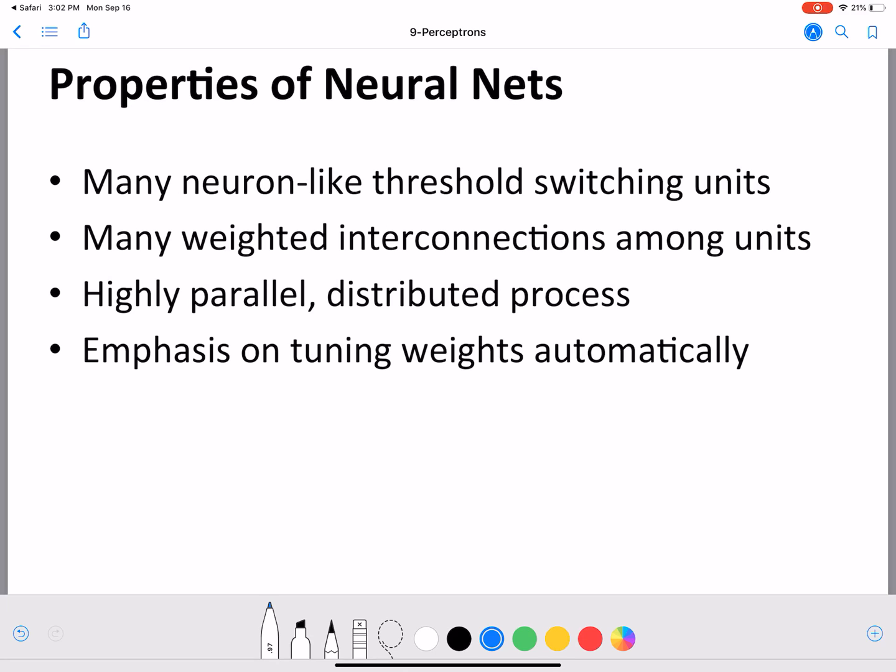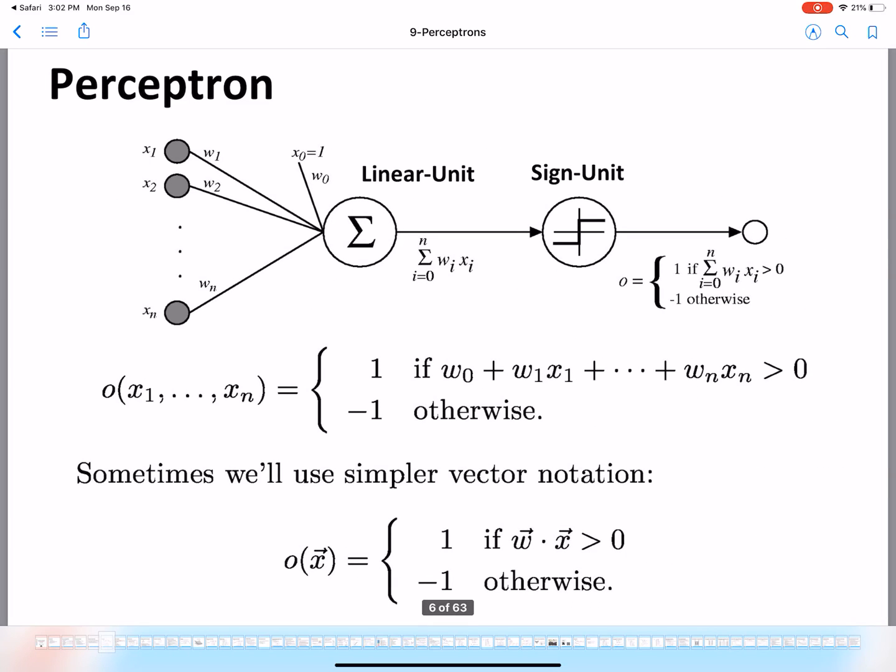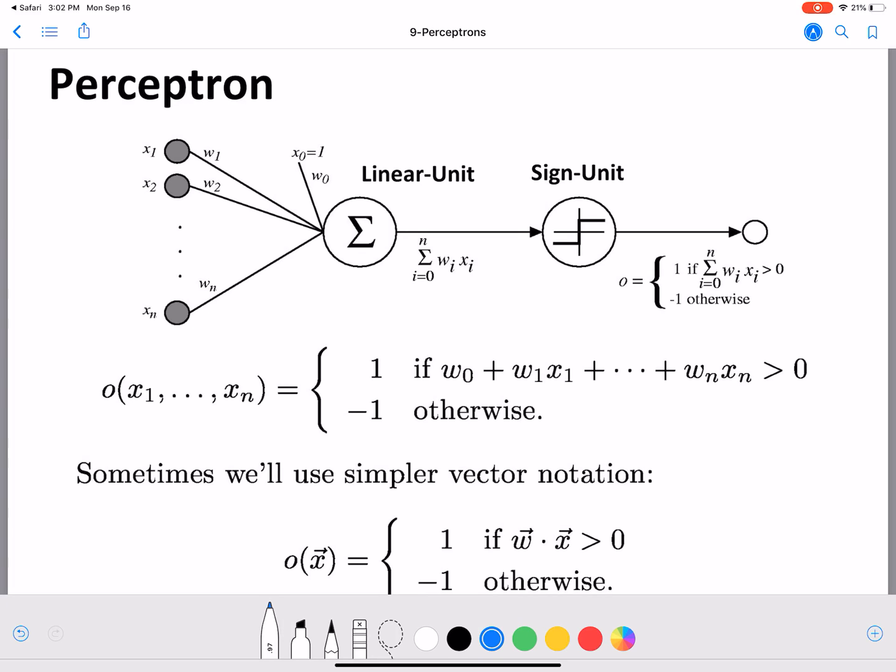Our simplest neural network is a perceptron. For a perceptron, we have a setup that is linear, a linear unit, and this is something we have seen already in logistic regression where we have a weighted sum of the different features.